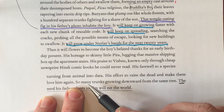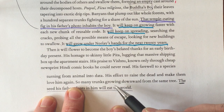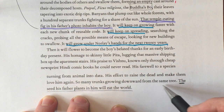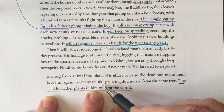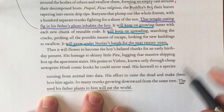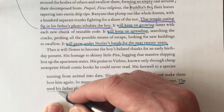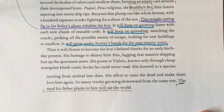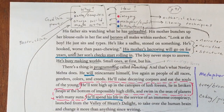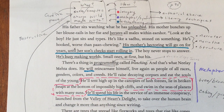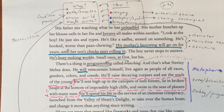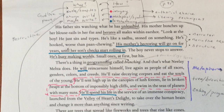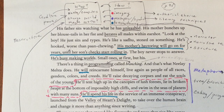'His effort to raise the dead and make them love him again. So many trunks growing downward from the same tree — the seed his father plants in him will eat the world.' Foreshadowing. Metaphor. So many things going on. Can you believe I talked for 20 minutes about one page? Thanks for listening to the end.